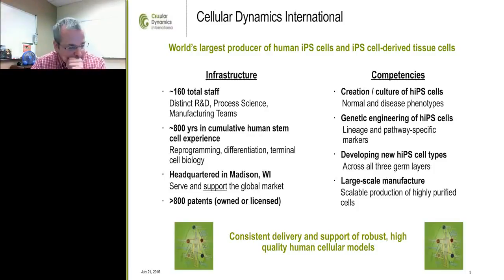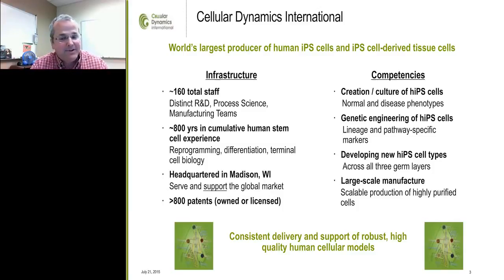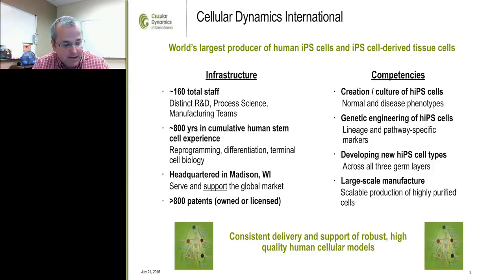Cellular Dynamics is the world's largest producer of human iPSC cells and the tissue cells derived from those cells. Our infrastructure includes about 160 people with distinct R&D, process science, and manufacturing teams — R&D develops protocols, process science scales them up, and manufacturing turns out the product. We've got extensive experience in stem cell biology, we're headquartered in Madison, Wisconsin, and we serve the global market with a good handle on a complex IP landscape.